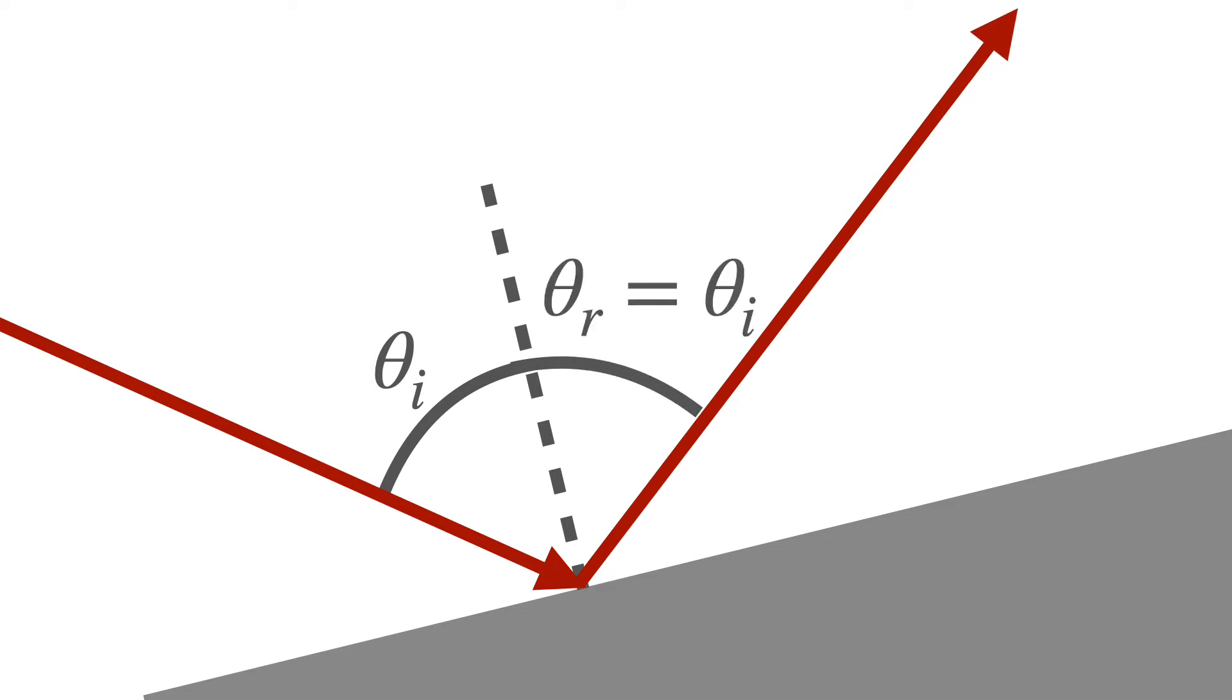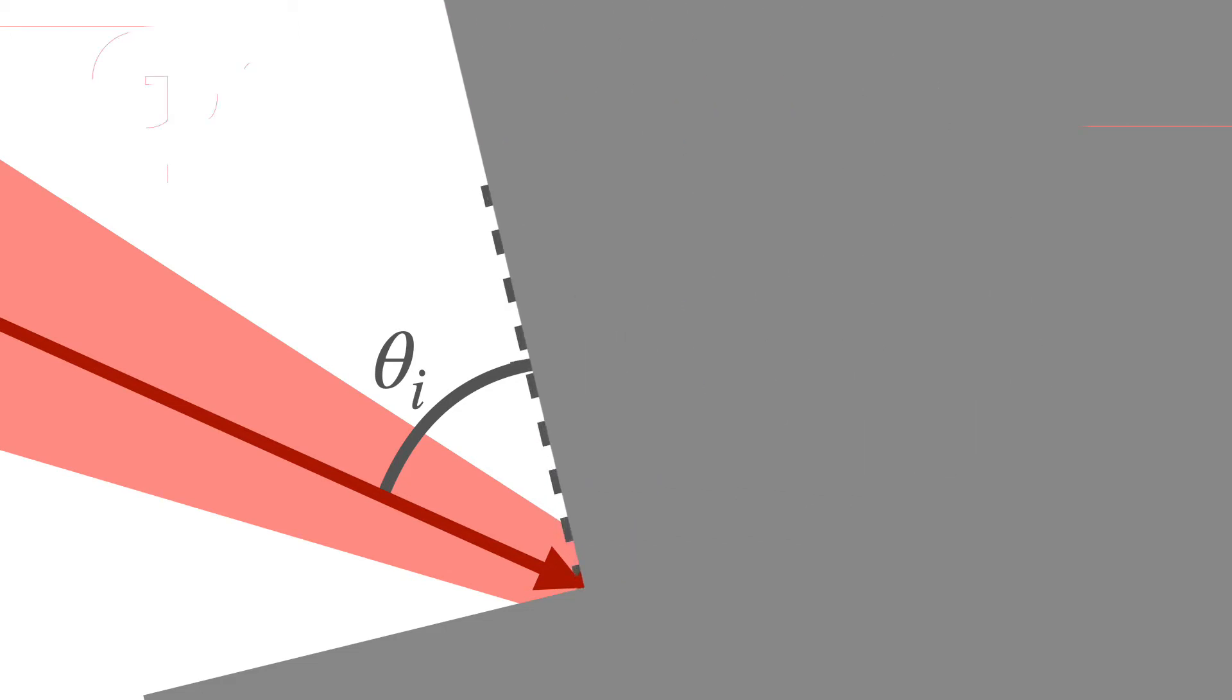However, geometric optics does not provide a complete picture of the interaction since real optical beams behave differently than the light ray. Real optical beams have finite transverse extent, which can no longer be described by geometric optics. A diffractive correction, called Goos-Hänchen shift, occurs.